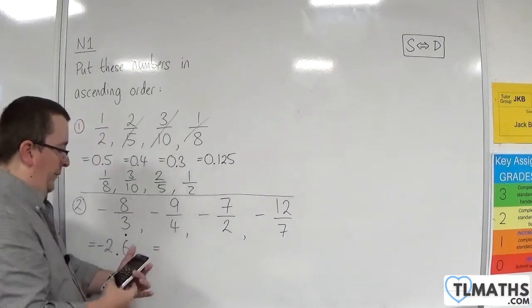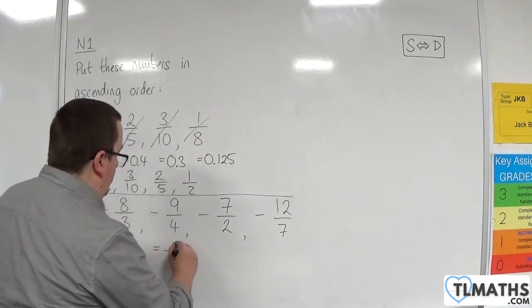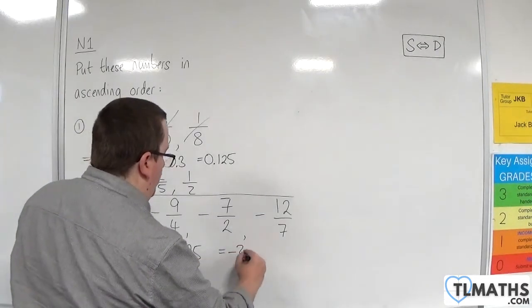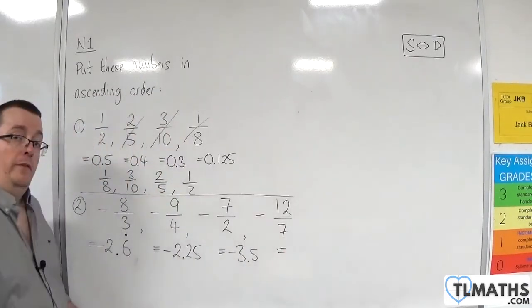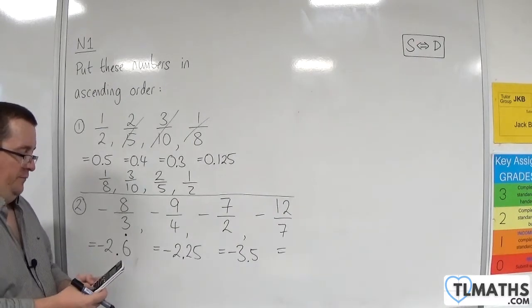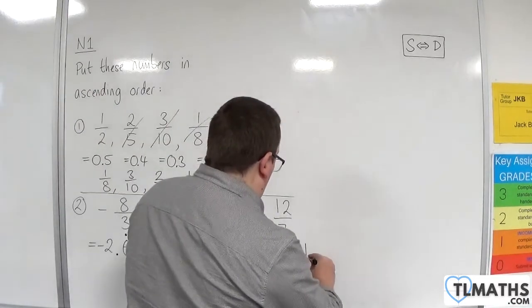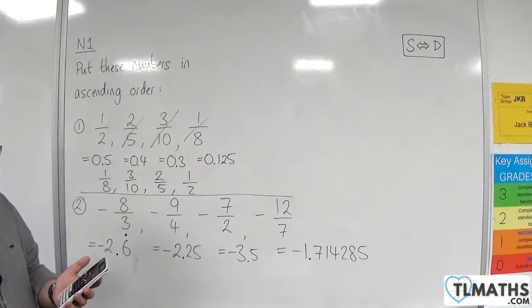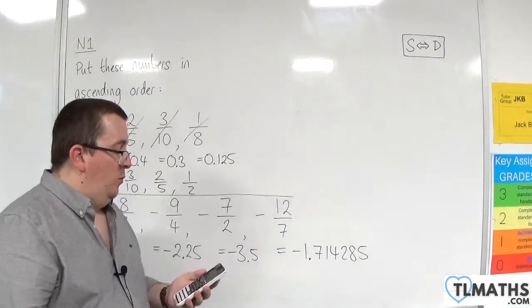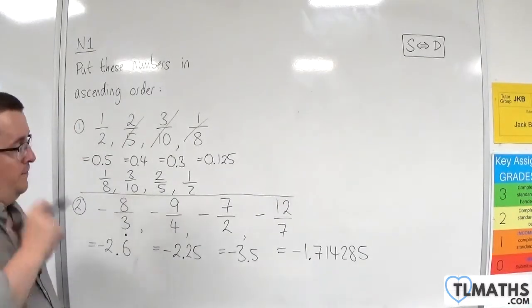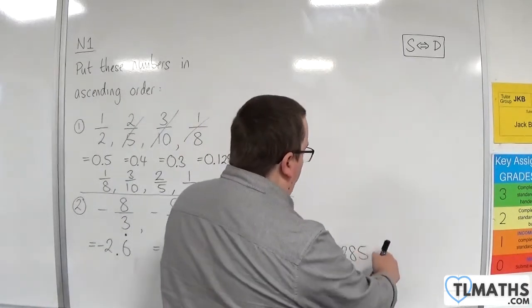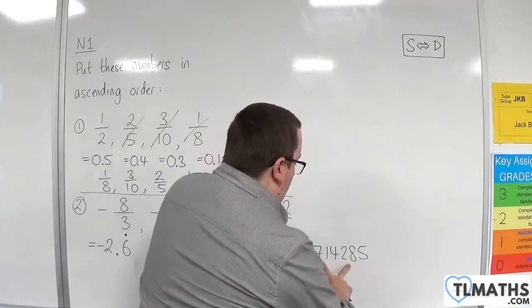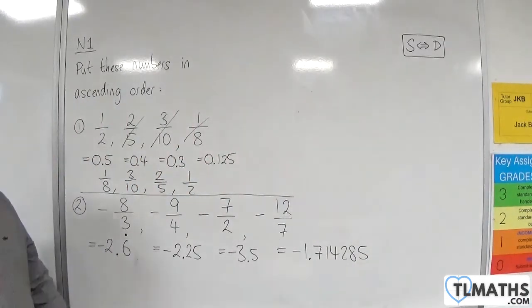Then we've got minus nine quarters: minus nine divided by four is minus two point two five — that's a terminating decimal. Minus seven halves is minus three point five. And then minus twelve over seven: minus twelve divided by seven gives you minus one point seven one four two eight five on your calculator, and then seven one four two eight five repeats — that portion repeats itself over and over again, so that is the bit that recurs.